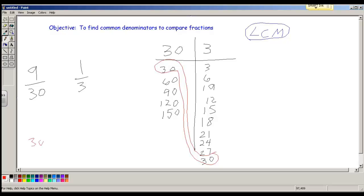So I'm going to rewrite my denominators down here. 30, 30. And I have the question to ask now. What did I do to this 30 to turn it into this 30? And the answer is nothing. Multiply by 1. So 9 times 1 is 9. That's easy. Awesome.